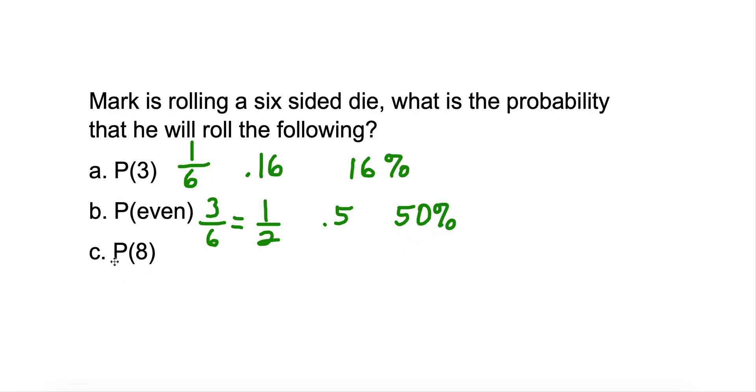What's the probability of Mark rolling an 8? Well, it's a six-sided die, so there isn't an 8. That would be 0, because there's 0 possibilities of him rolling an 8.